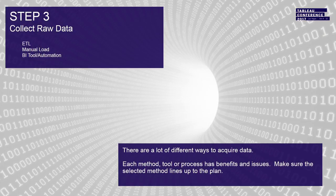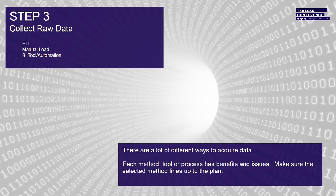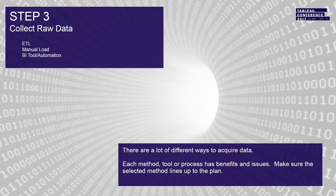Step number three is collect the raw data. This could be many forms - ETL processes like Informatica, emails of Excel spreadsheets, all sorts of stuff. There are a lot of different ways to acquire data. The way you acquire the data needs to match the necessity of what you're doing. If I have a one-month update spreadsheet and the data comes to me from somebody that emails it - like finance, they don't like to share their data, they just email a spreadsheet once a month - why would I spend time automating that? But if I have a daily process that people need to access regularly, I'm going to build an ETL for it. The tooling needs to fit what you're actually doing with it.